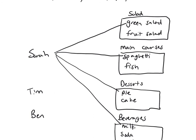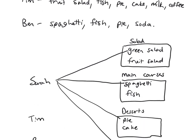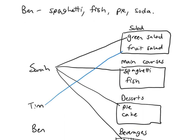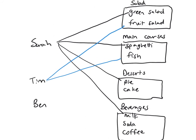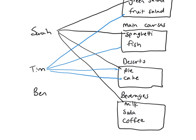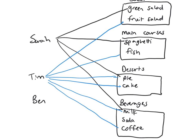Let's use blue for Tim. Tim chose a fruit salad, fish, pie, and cake — quite the sweet tooth — and milk and coffee. Now for Ben, I'll use red. Ben skipped the salad station, went for both spaghetti and fish, chose pie, and then chose soda.